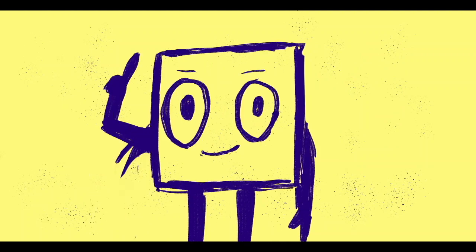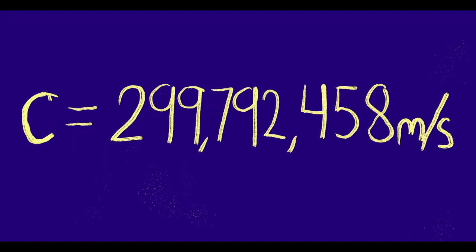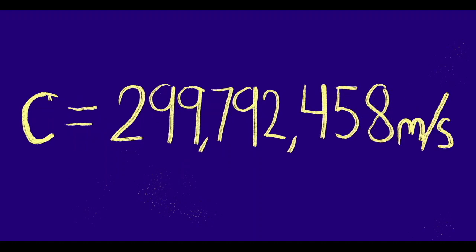You are absolutely right. Nothing can travel faster than the speed of light in a vacuum because of relativity, and that speed is C. C is 299,792,458 meters per second. Saying that is almost as hard as getting close to the speed of light.